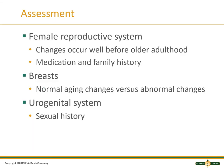For the female reproductive system, we understand that changes occur well before older adulthood. There's medication, family history — these are all things that come into play. With the breasts, there are normal aging changes and abnormal changes. If they've breastfed, that can cause normal or abnormal changes of the breasts. And then the urogenital system — sexual history is very important.